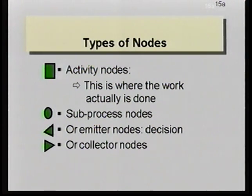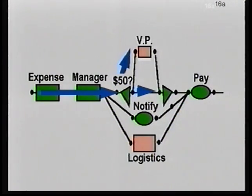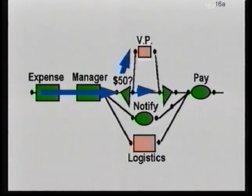The final couple of kinds of nodes are the ones that look like triangles. We call them or-emitter and or-collector nodes — that may come from my engineering background. What they're there for is to allow us to express a choice or a decision in the process. One classic example might be a make-versus-buy choice. In this picture, illustrating a possible expense report process, we might have a requirement that if the expense report is for more than $50, a VP has to sign it; otherwise it's sufficient for the employee's manager to have signed it. And that's expressed in this graph.